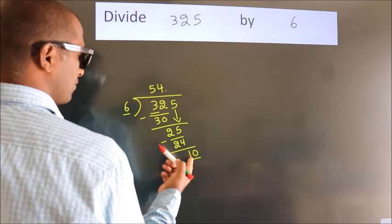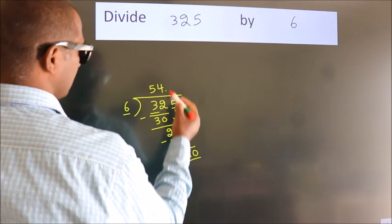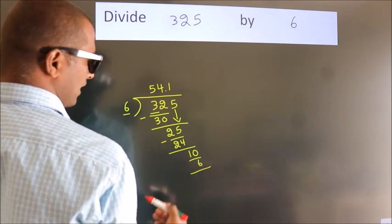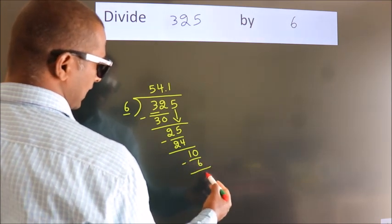A number close to 10 in the 6 table is 6 ones, 6. Now, we subtract. We get 4.